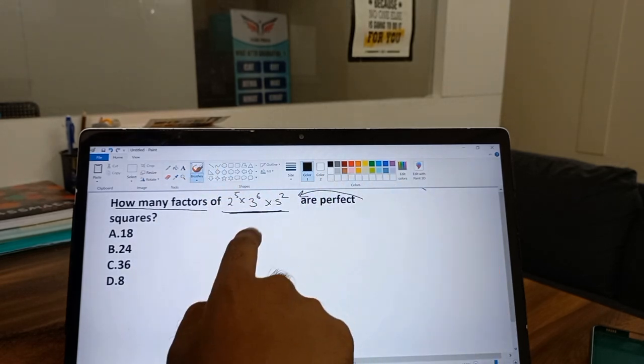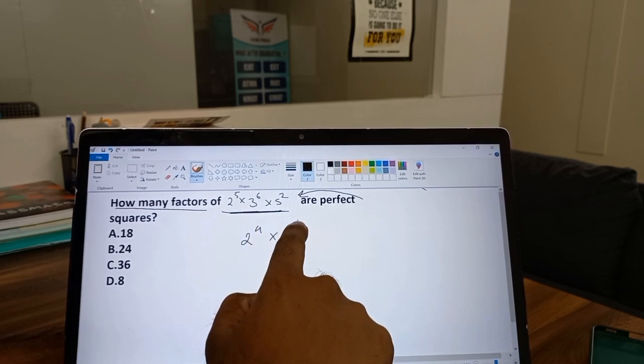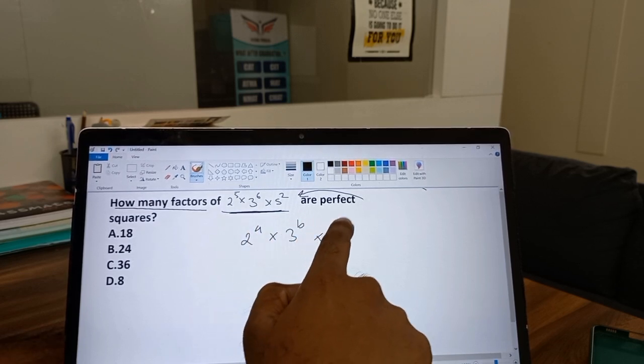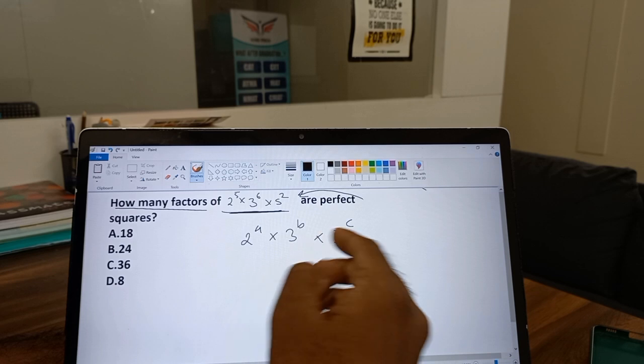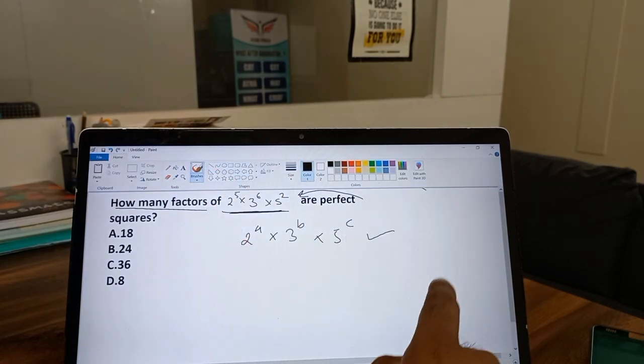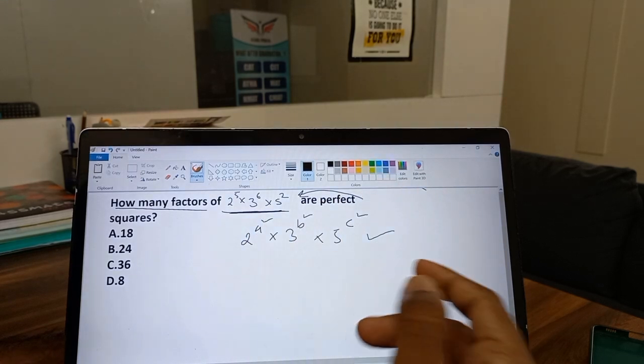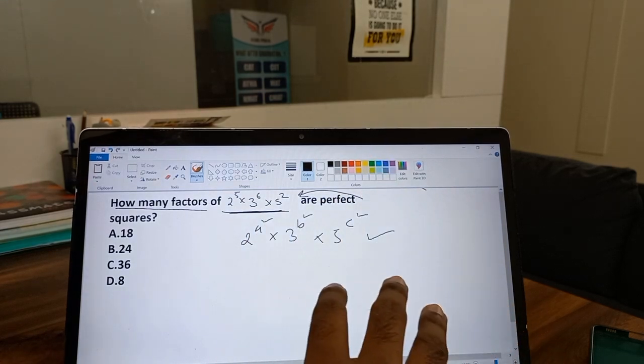It must be in the form of 2^a × 3^b × 5^c. Then only it will be a possible factor of this number. If you want to make this number a perfect square, the value of a must be in even form. Then only it will be a perfect square.